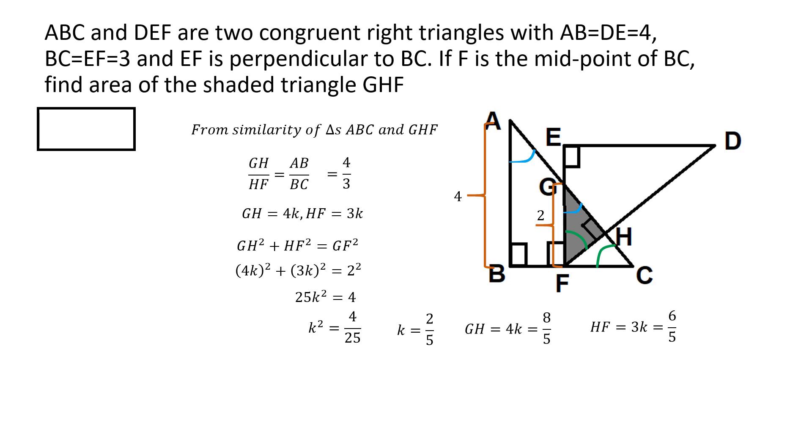And then we are asked to find the area of triangle GHF. Now, GHF being a right-angled triangle, the area of the right-angled triangle is simply half multiplied by the product of the two legs of the right-angled triangle. Because you can regard HF as the base of the triangle and GH as the altitude. So half altitude multiplied by base. And that's the area of the triangle GHF.